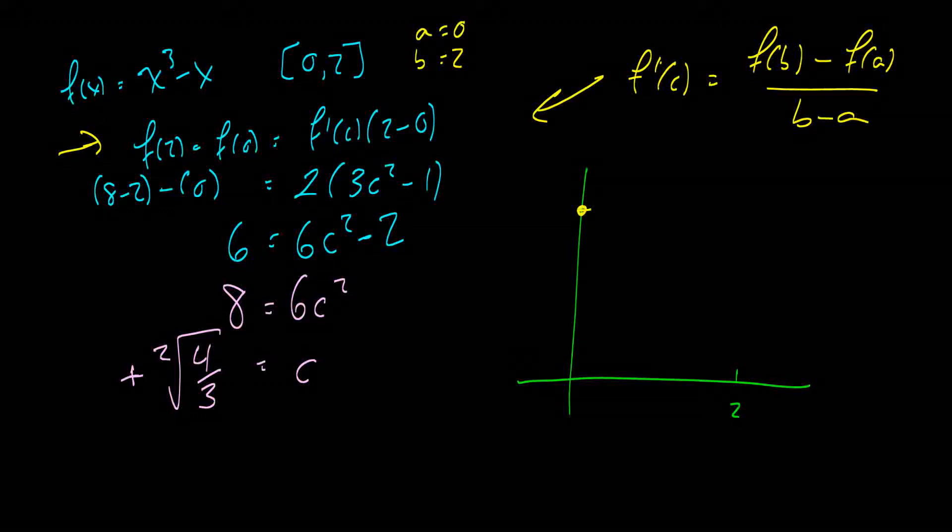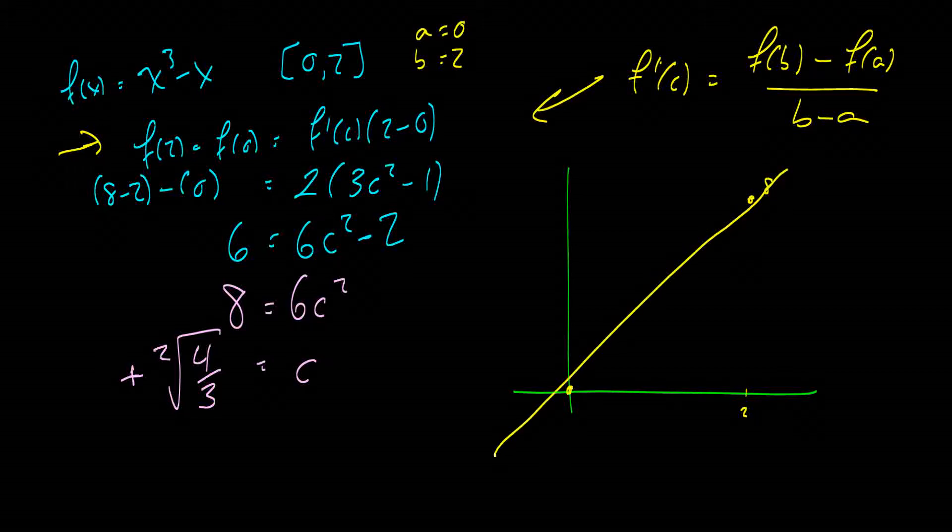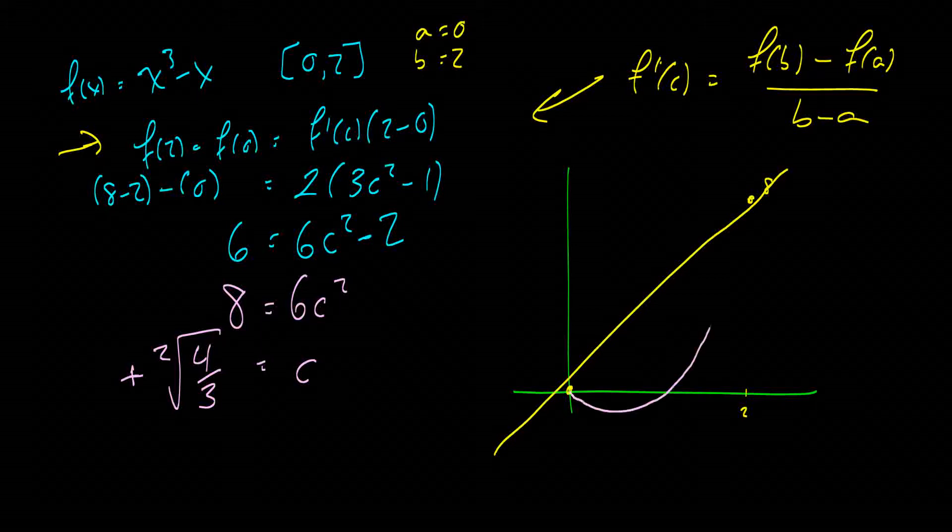So what this says is that we have a graph here of our function from 0 to 2. So there's 2. Here's 0. At 0, it's up here at 8. And at 2, it's down at 0 here. f of 2, sorry. This is backwards. Again, it's very easy to make little mistakes. So let's actually redraw that graph. At 0, it's going to be at 0 here at the point. And at 2, it's going to be up here at 8.